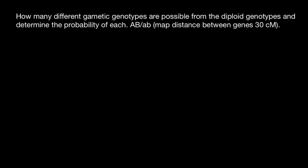Hello and welcome to Nikolai's genetics lessons, and today's problem is how many different gametic genotypes are possible from the diploid genotypes and determine the probability of each. And here's the genotype of the diploid organism, map distance between genes 30 centimorgans.